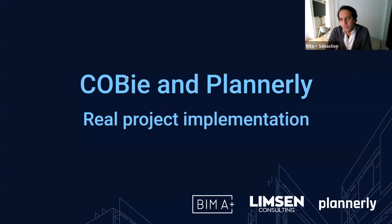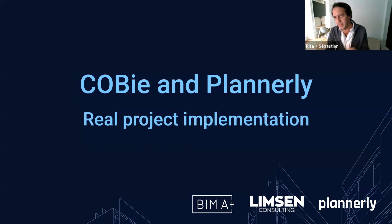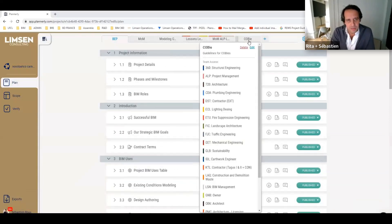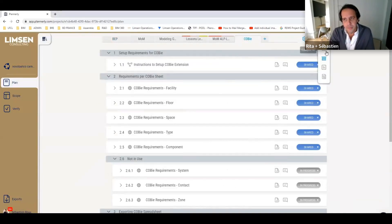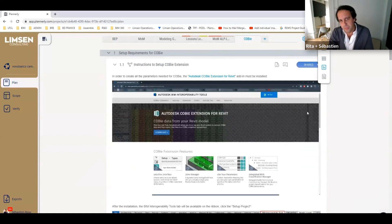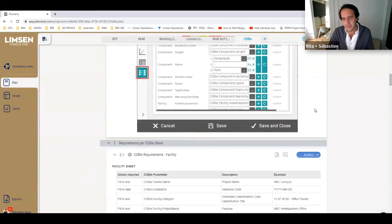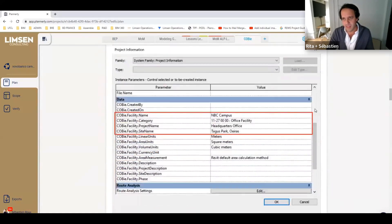What Rita just showed is the practical output of what was developed as a dissertation, and just to reinforce it - this is a template that is now available for the community. So anyone can just take that template and, as Clive said, add it to a BEP or exchange information requirements or whatever. I'm just going to show how it works on our side and how we are implementing it on real-world projects. This looks exactly like the template Rita just showed. We have a BEP here, and we have one page called COBE.